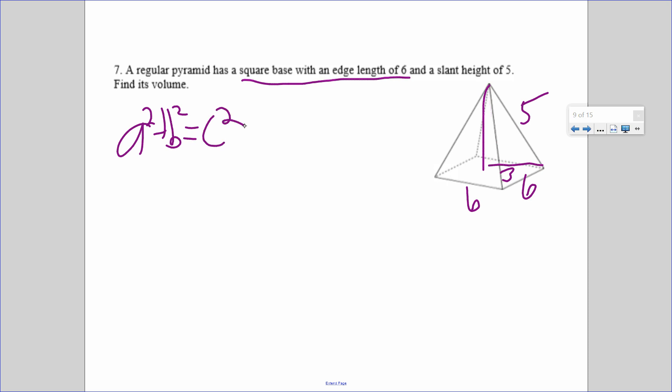Again, if they give you slant height, you're going to have to use the Pythagorean theorem to find the height. I'm going to give you about a minute or so to find the height, and then from there to find the volume.